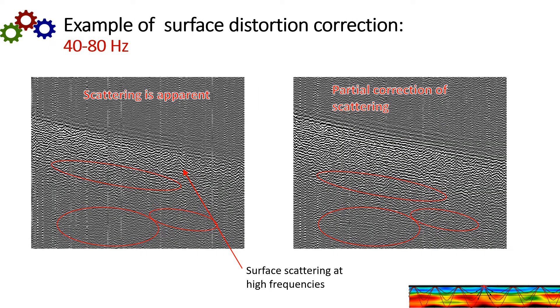Here's an example of surface scattering distortion correction on a shot gather. Here's the data. And this is dense data without scattering correction. And you can actually see some of the scattering occurring here and here. And on the right side is a partial correction of the scattering. It's not perfect. And you can see now the energy here is a lot more continuous. And then down here you can now see more coherent energy in the ellipses that didn't have coherency before.